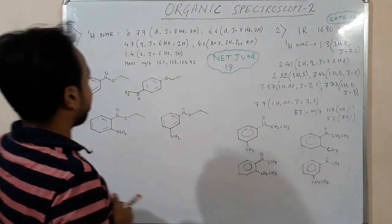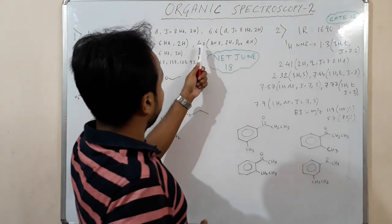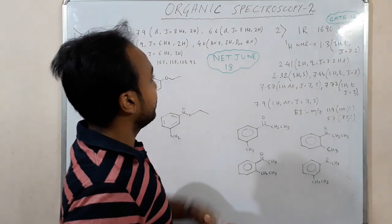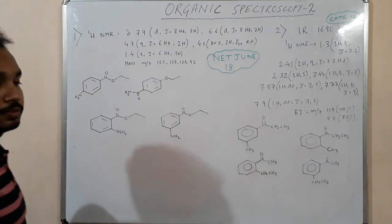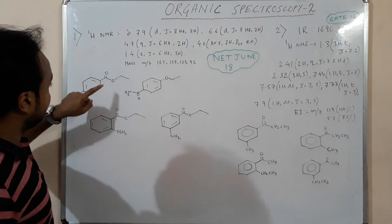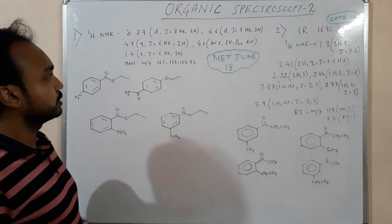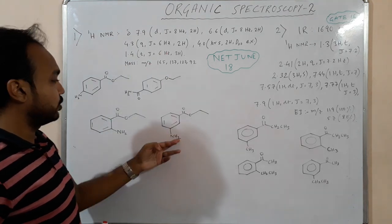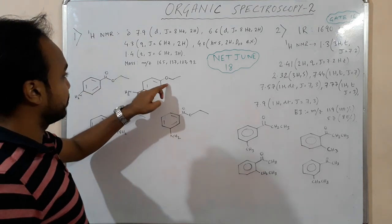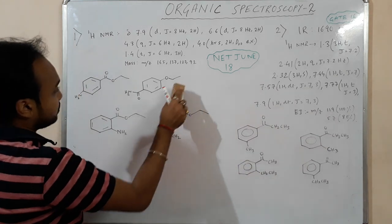We have a mass value of 165, meaning an ester-type group. From the NMR we are getting a broad singlet, 2 hydrogen, D2O exchangeable. From the full structure we can see that three structures are possible because we have NH2 groups — a broad singlet, 2 hydrogen, D2O exchangeable. There is an extra group here.